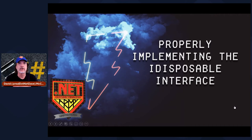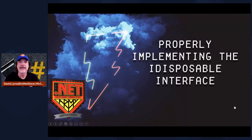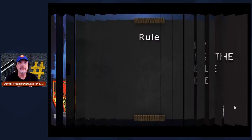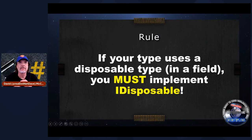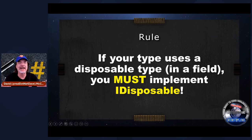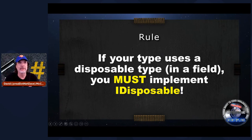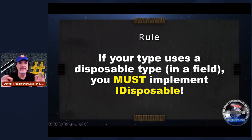Now let's talk about if you need to implement iDisposable in the types that you create. But how do you know if you need to implement iDisposable? Well, if your type uses a disposable type in a field, you must implement iDisposable. I don't have time to talk about when you're inheriting types that implement iDisposable — go read my articles. But if you have a disposable type like a StreamReader in a field in your type, you need to implement iDisposable. Or if you have a bitmap or a stream in a private field in your type, you need to implement iDisposable.